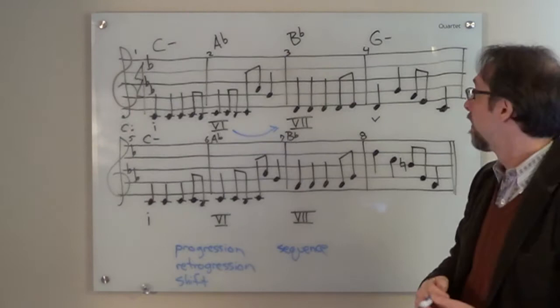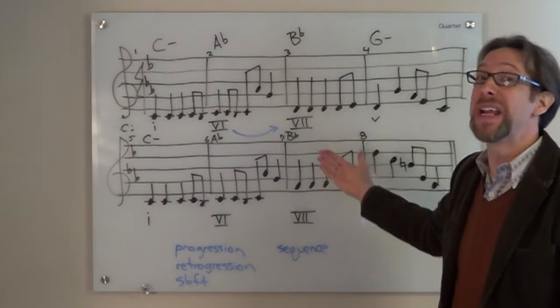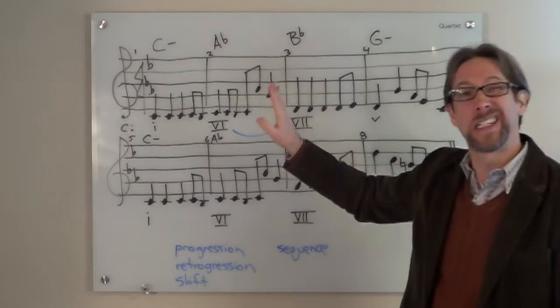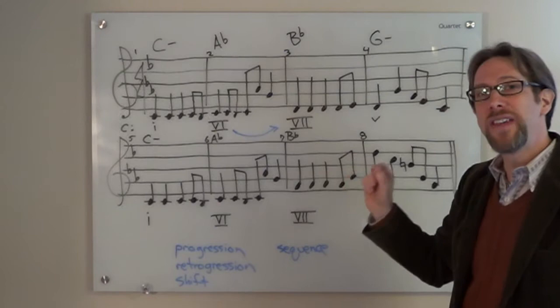Then, it goes to a minor V chord. V, normally in our style, we would expect it to be a major sonority. We would expect to raise the leading tone, have a major V chord. But here, it's still a diatonic chord. So, we're continuing this idea of diatonic chords. It's in the key, right? So, it's not going to sound crazy. But, in addition to that, we've now established a bit of a pattern.